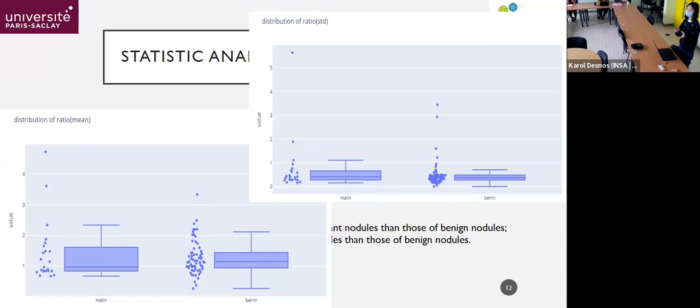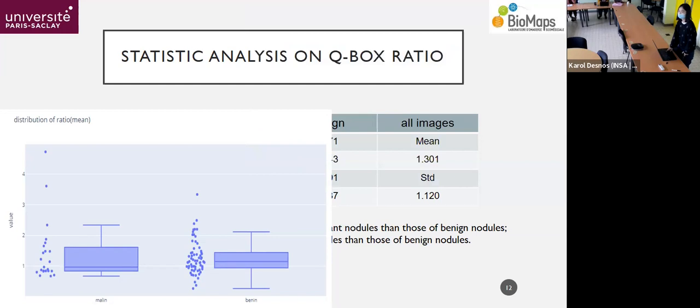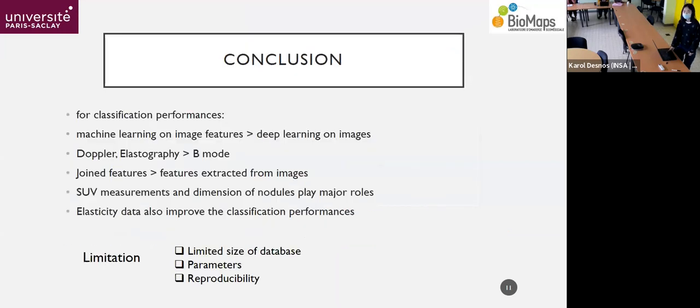So, also from the box plot of distribution of the distribution of ratio STD, the standard deviation, we see the malignant group, they have higher standard deviation on the ratio than the benign ones. But also we can see that we have not sufficient data in malignant group. Maybe with more data, we can see more clearly how this ratio, this elasticity data influence the malignancy.